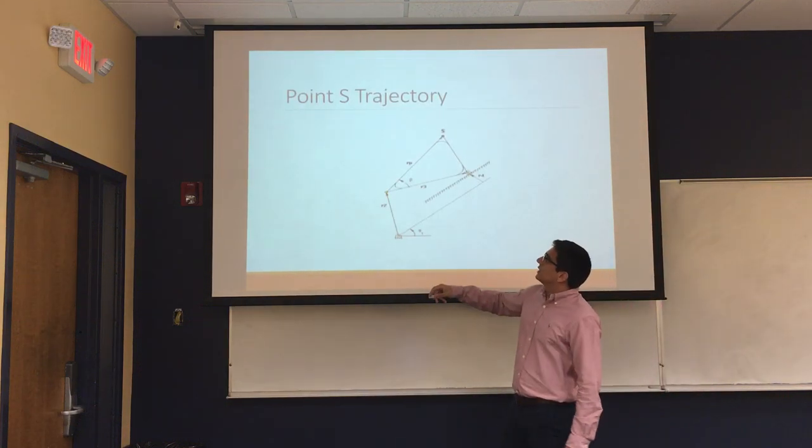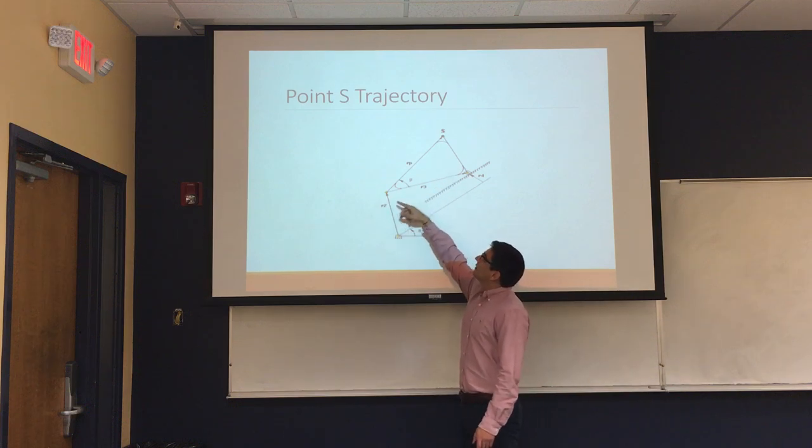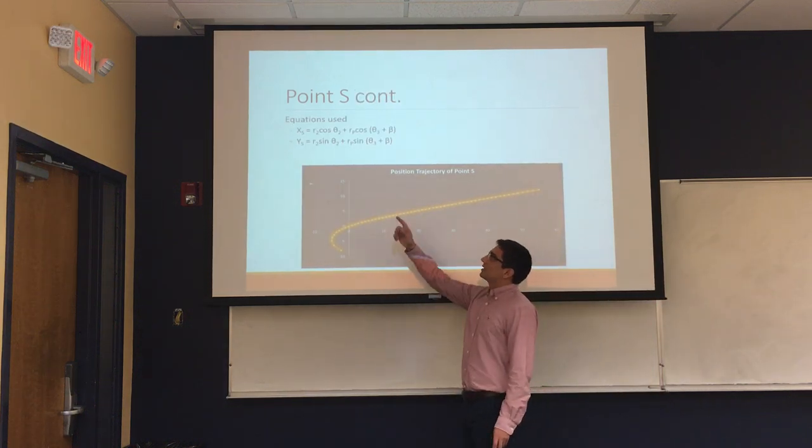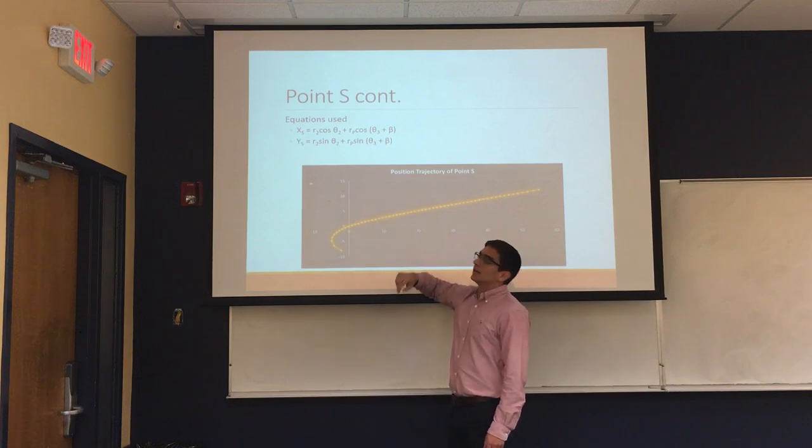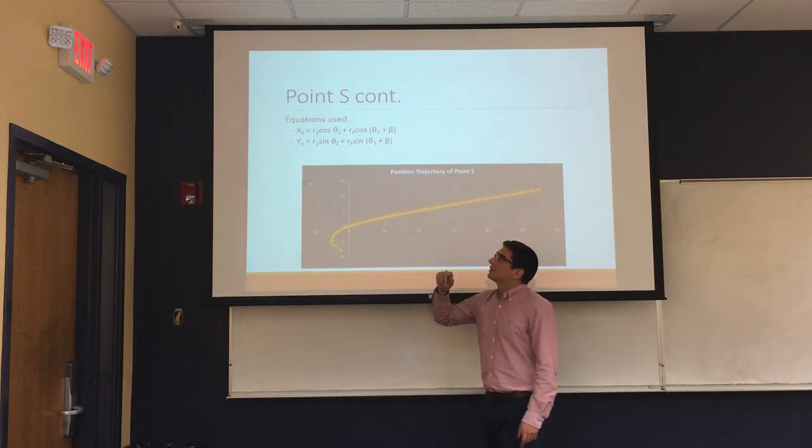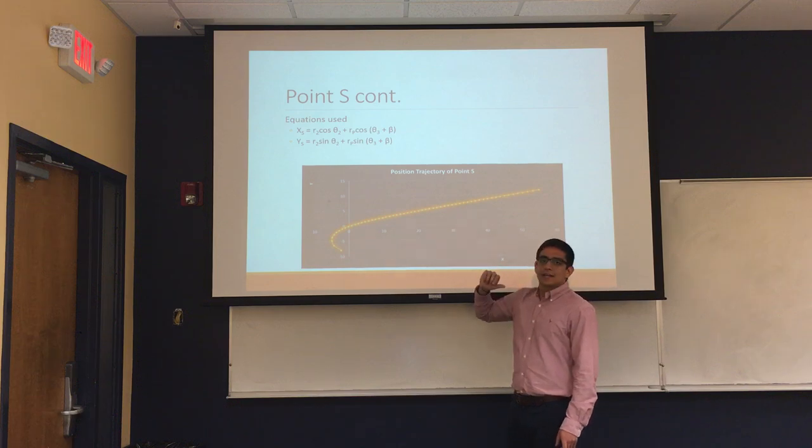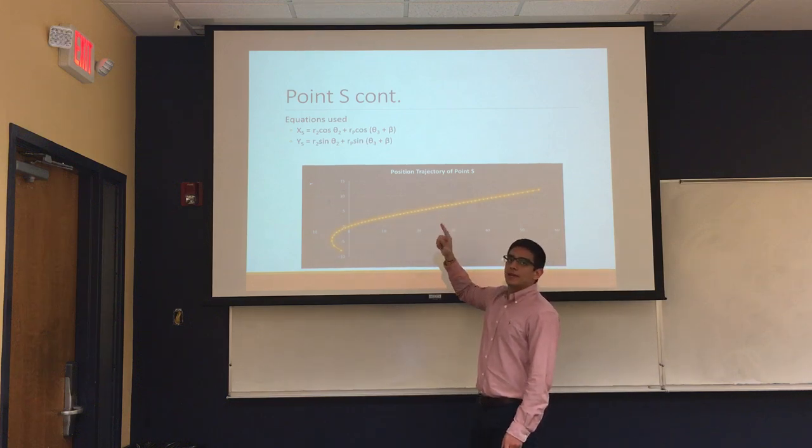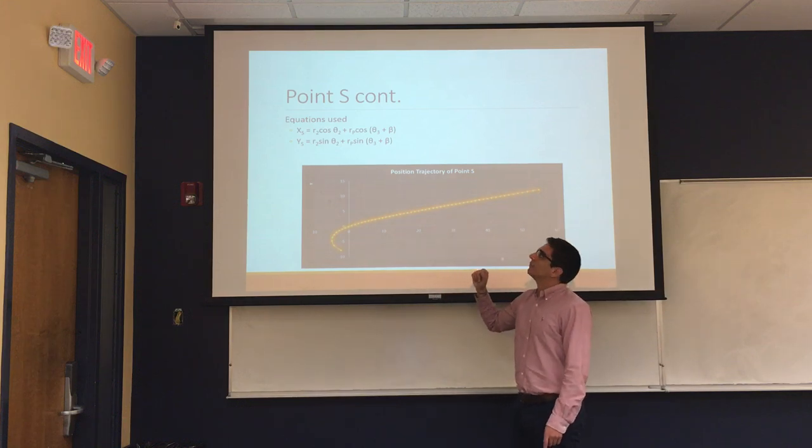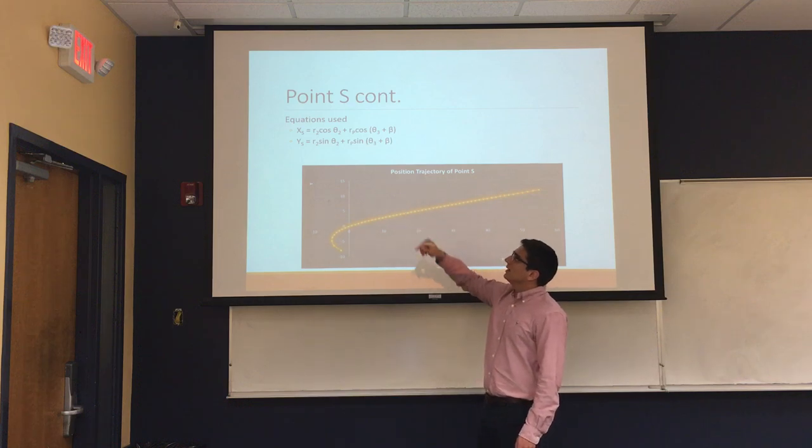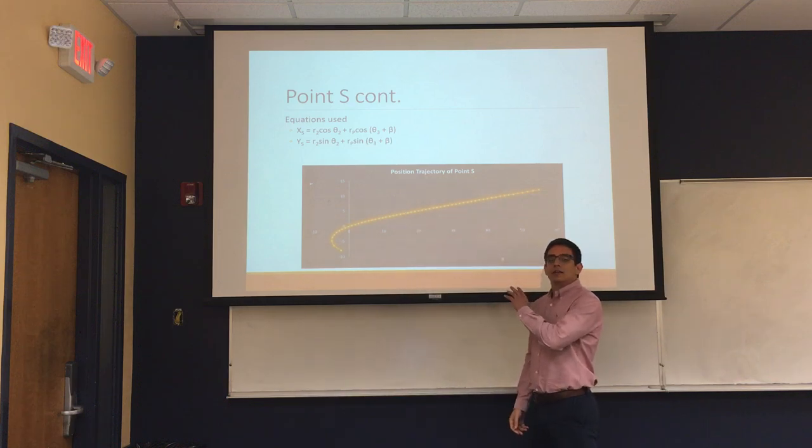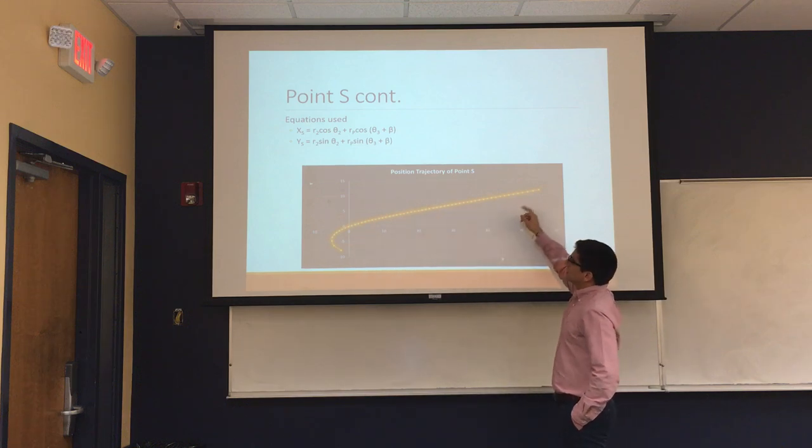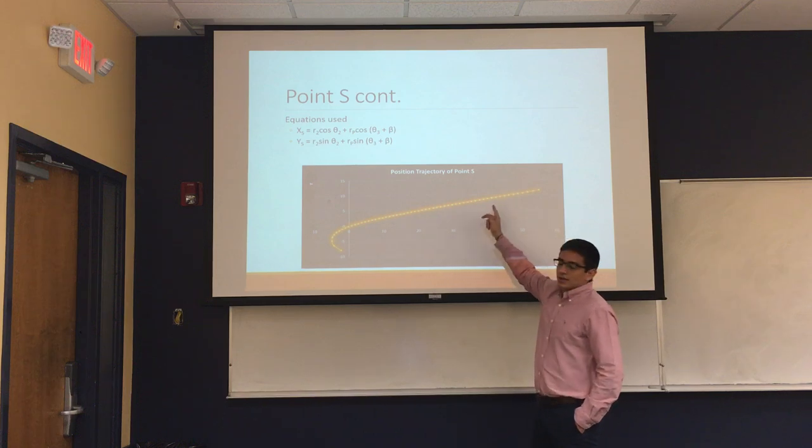After, we are solving for the position analysis of the point S, which is attached to the end of the coupler QS. For this, we use these two equations, which is the x position and the y position. The x position is R2 cosine theta2 plus that coupler link, which was in our case the same link as R3, which is 30 inches, times the cosine of theta3 plus beta. Beta was given as well and it was 20 degrees. And then same thing, we just plug in those numbers for y and then we were told to find the x and y positions for one closure, which I did here, and then I graphed them, which we ended up getting this curve for the S position.